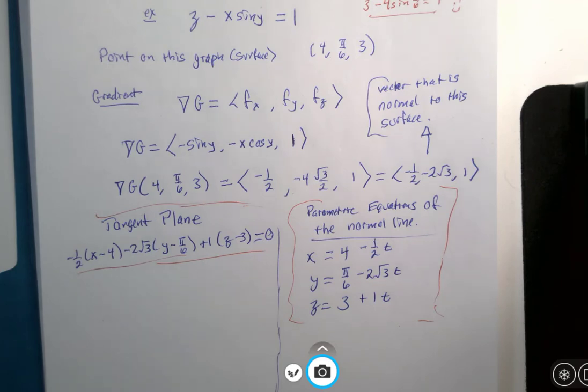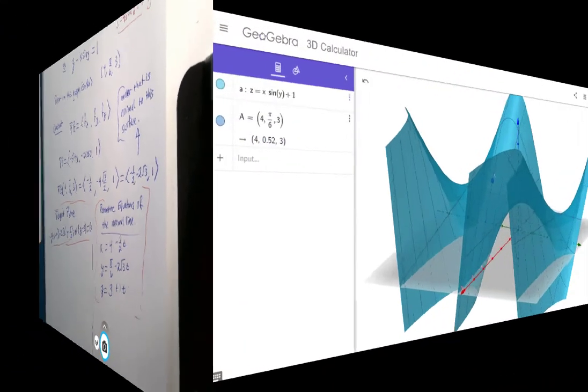Now hang on a second, we're going to transition to the 3D graph and I'll give you a quick little look at the tangent plane on this crazy surface. So hold on.